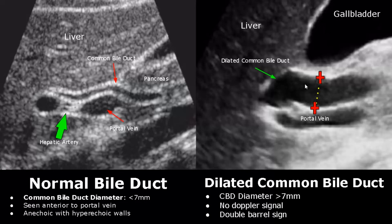This appearance is termed the double barrel sign. It is formed by the dilated duct which is anterior to the portal vein.